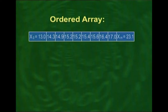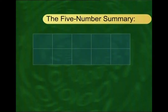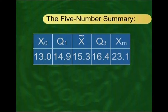The ordered array enables us to locate x0, the smallest value, and xm, the largest, very easily. It also enables us to compute the median, the first quartile, and the third quartile. For this data set, the median is 15.30 thousand dollars, Q1 is 14.90 thousand dollars, and Q3 is 16.40 thousand dollars. Therefore, the five-number summary is: x0 = 13.0, Q1 = 14.9, x-tilde = 15.3, Q3 = 16.4, and xm = 23.1.